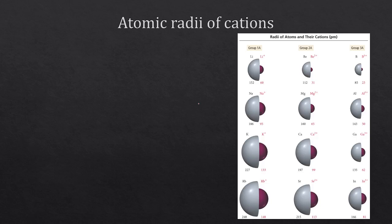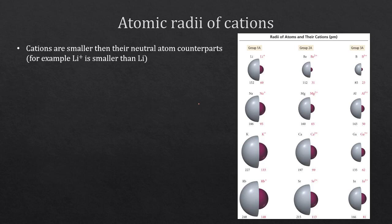In the last video we looked at the size of neutral atoms and how it changes with the periodic table. Here we're going to look at the effect on cations and anions. A cation is an atom that has lost at least one electron, so it becomes positively charged.